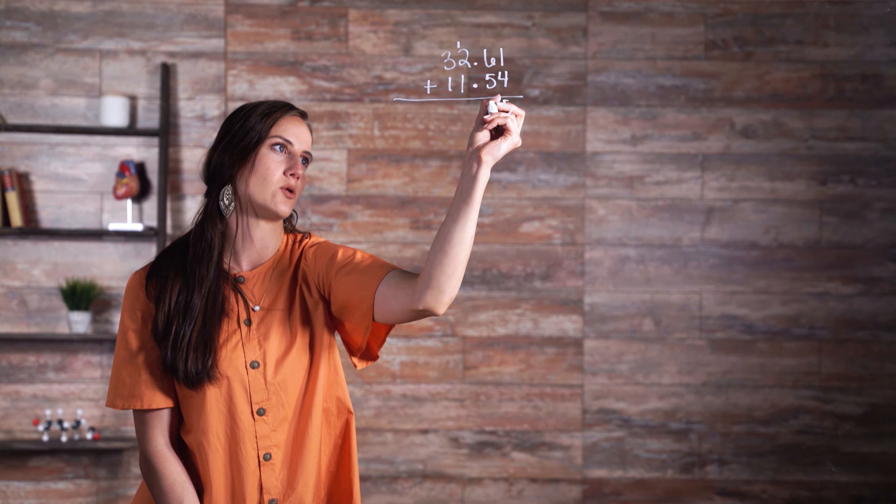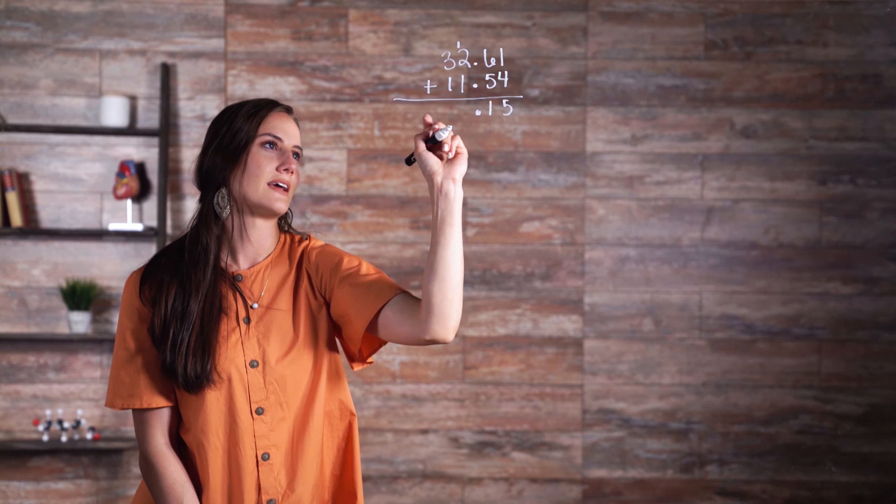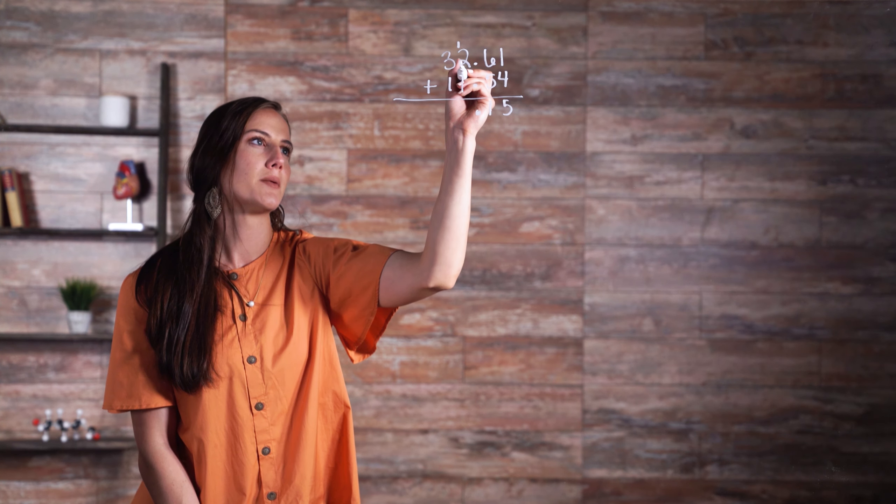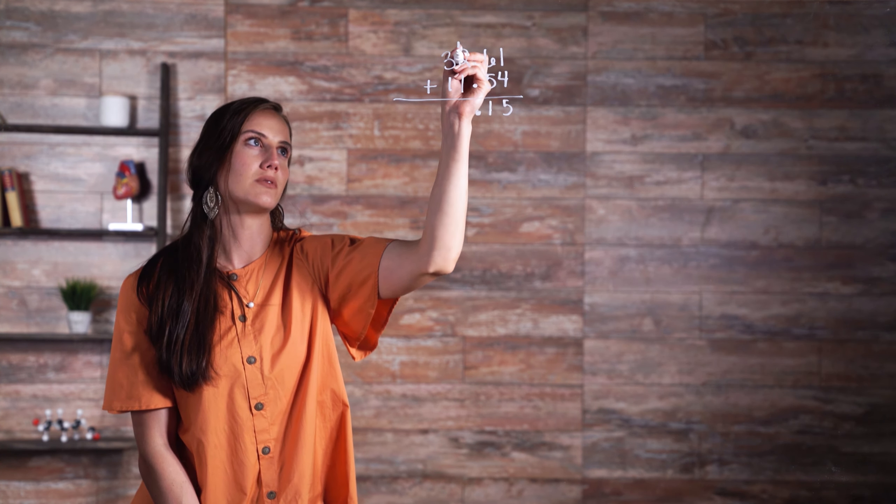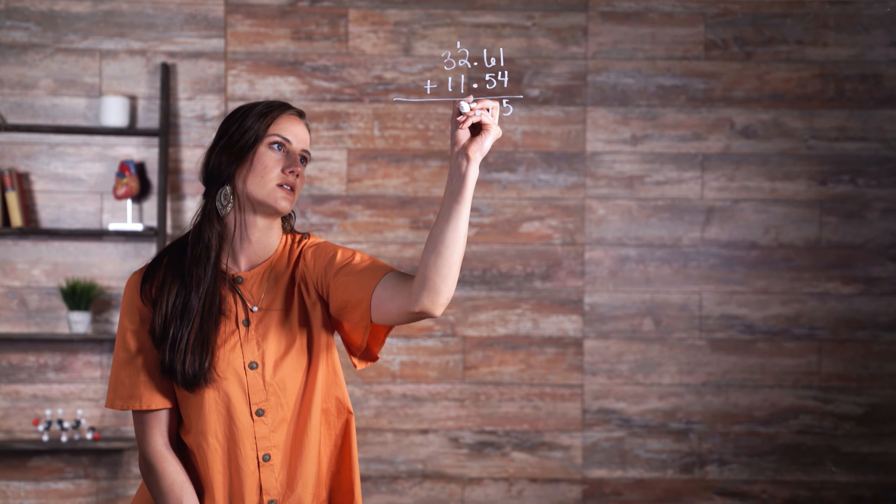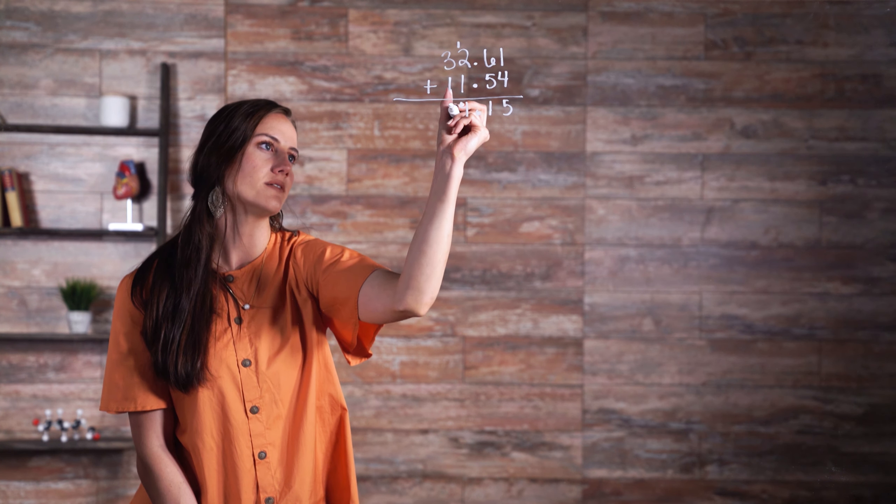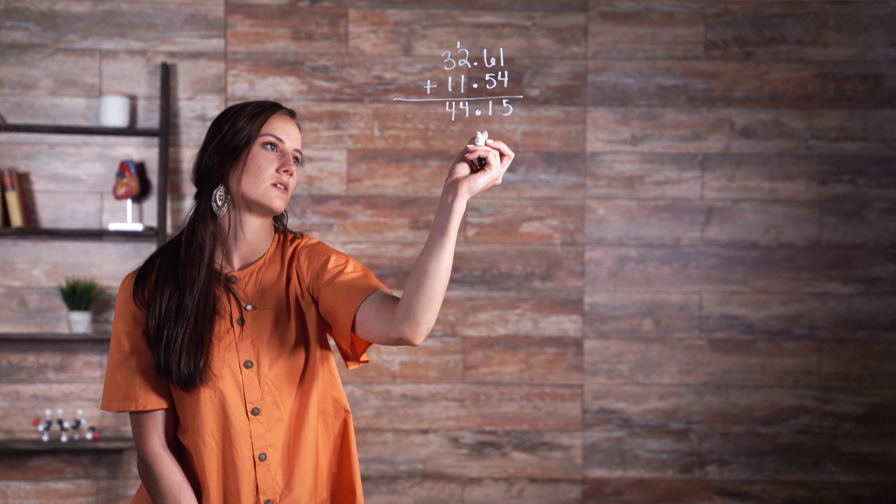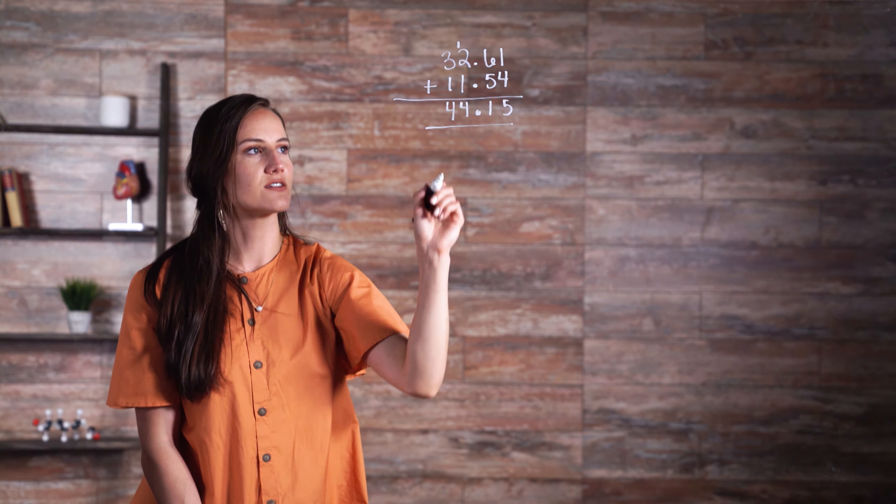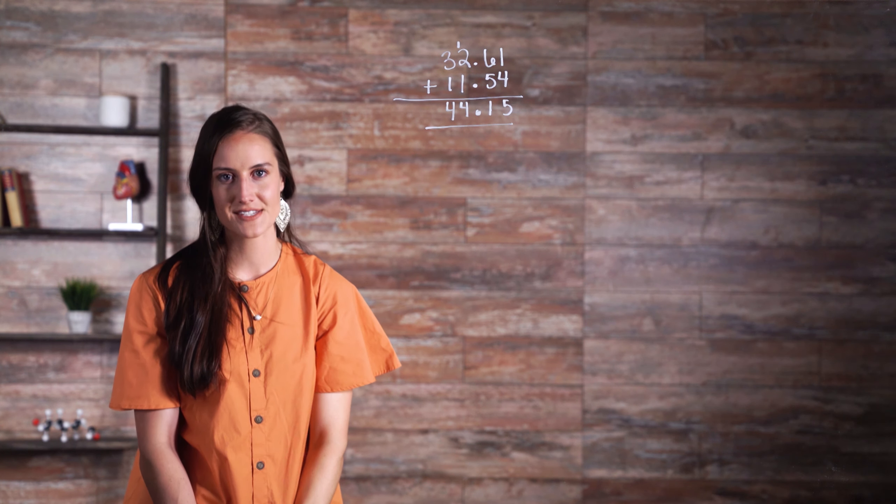Bring down our decimal, and now we have 2 plus 1 plus this other one, so it's 3, 4. And now we add 3 and 1, and we get 4. So our final answer is 44.15.